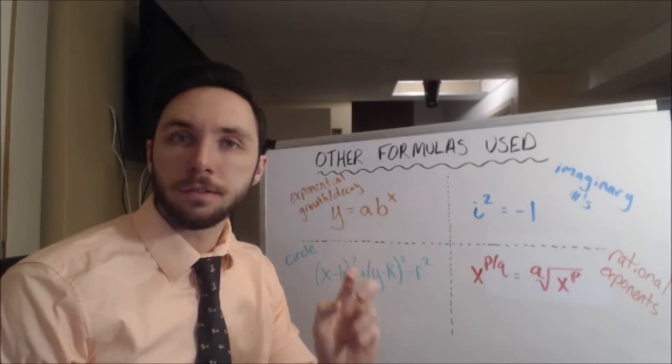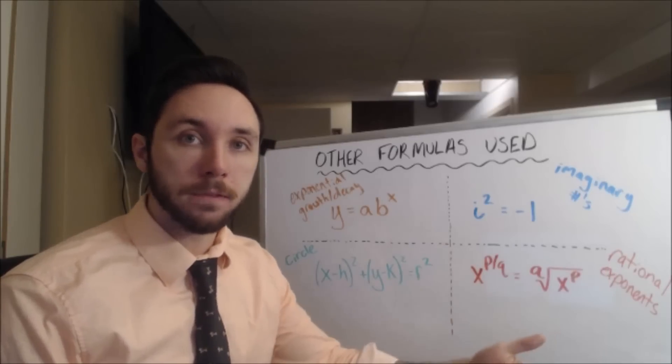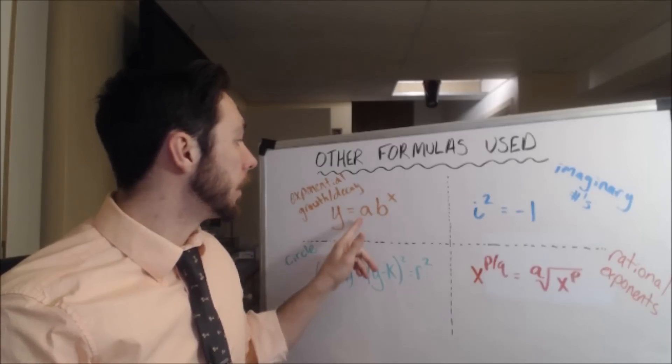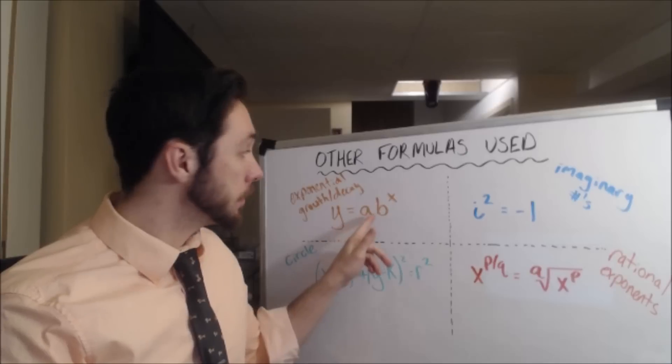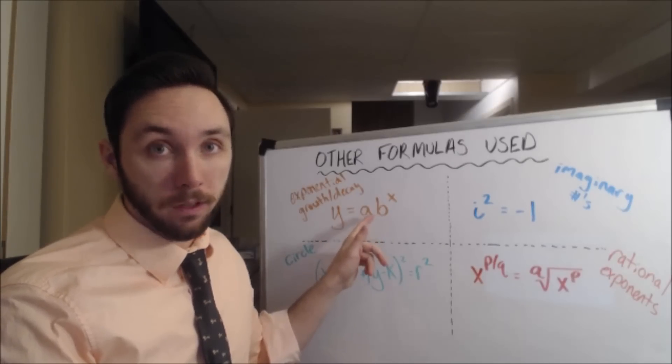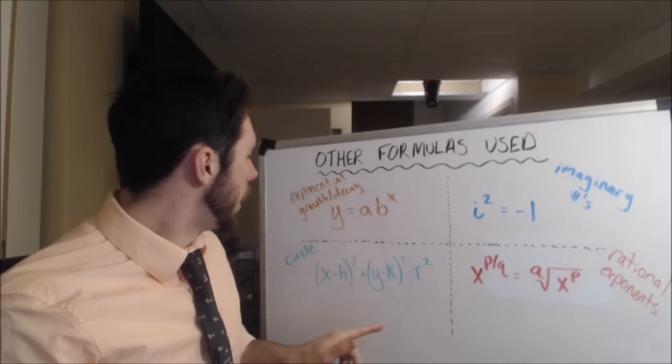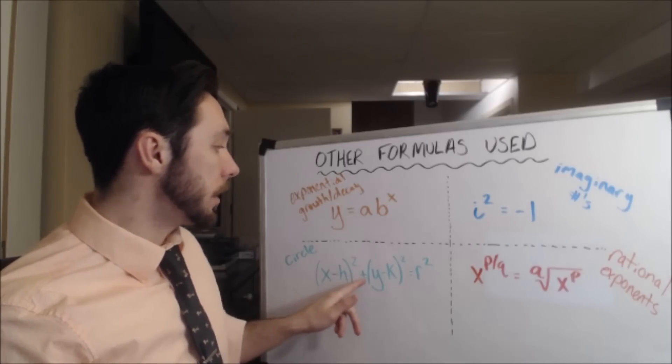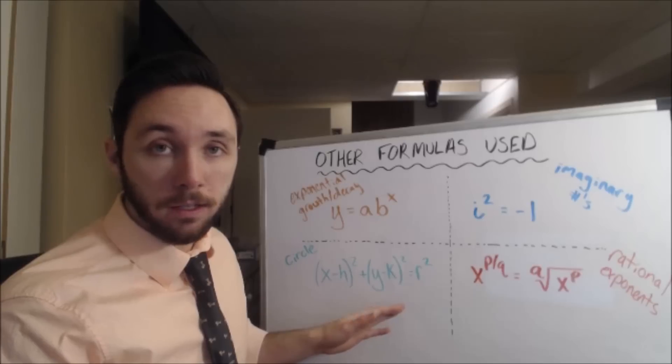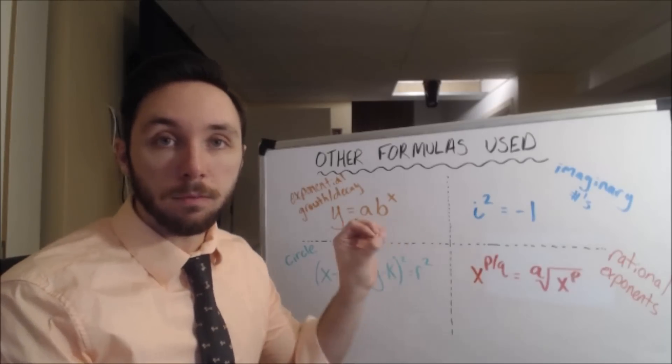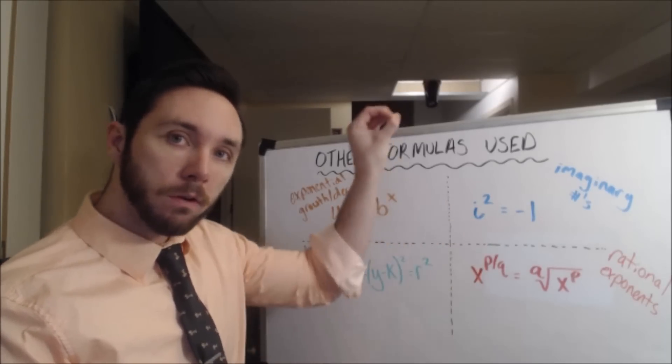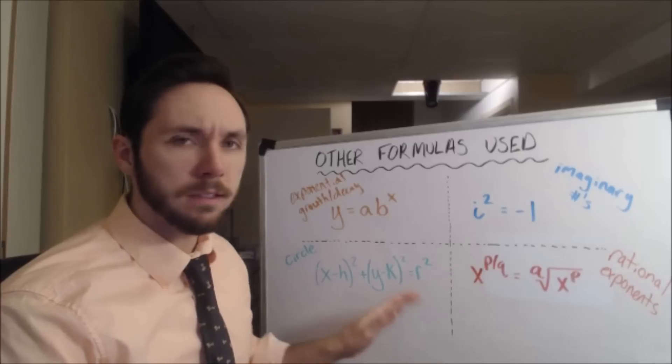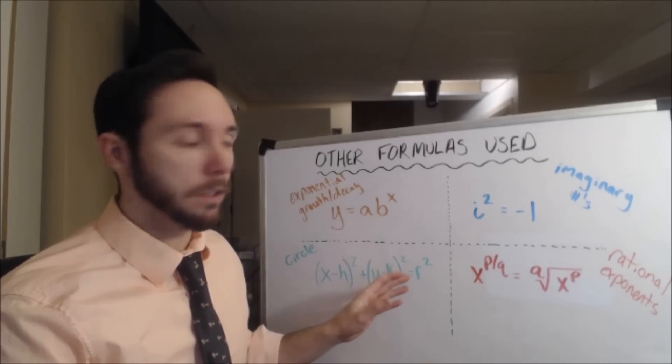Okay, here are the others. So the ones that weren't used as frequently as the last two groups, but still showed up. Here we have the exponential growth and decay formula, where a represents your starting value or y-intercept, and b represents either your growth or decay factor. I saw a good amount of this. Here I have the equation for a circle in green down here. It's the quantity of x minus h squared plus the quantity of y minus k squared, and that's equal to r squared. So h and k, those allow you to make either horizontal or vertical shifts to the circle. And then r affects the radius of the circle. Didn't see too much of this, but it showed up on most of the ones that I looked at.